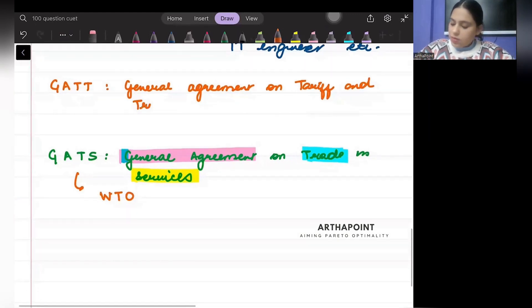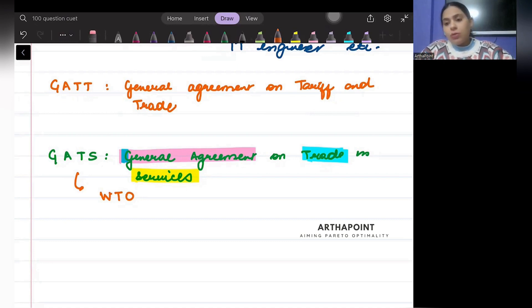What used to happen was that earlier we used to have General Agreement on Tariff and Trade. But then we realized that services are becoming a very important part of the tradable sector. And since services were becoming such an important part of the tradable sector, we wanted to ensure that we have everything related to services included here.